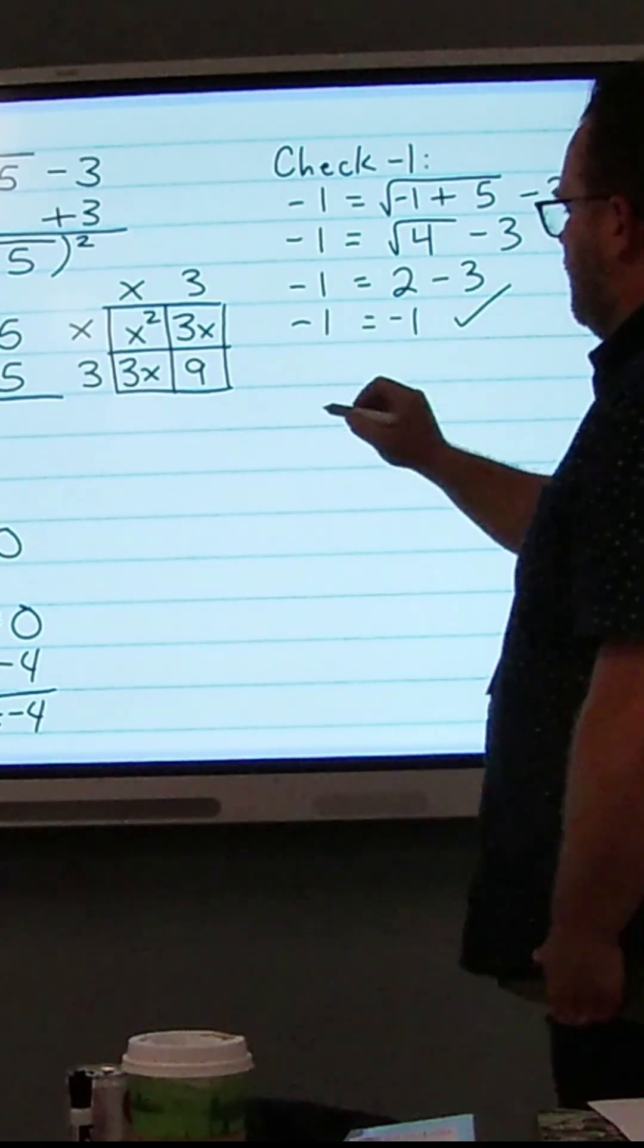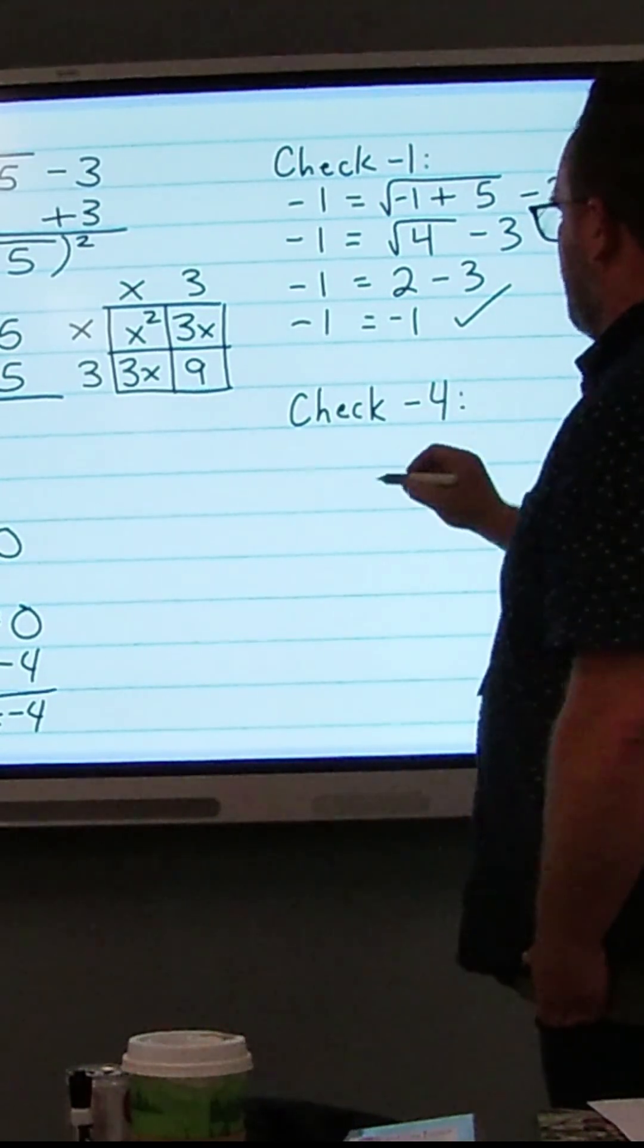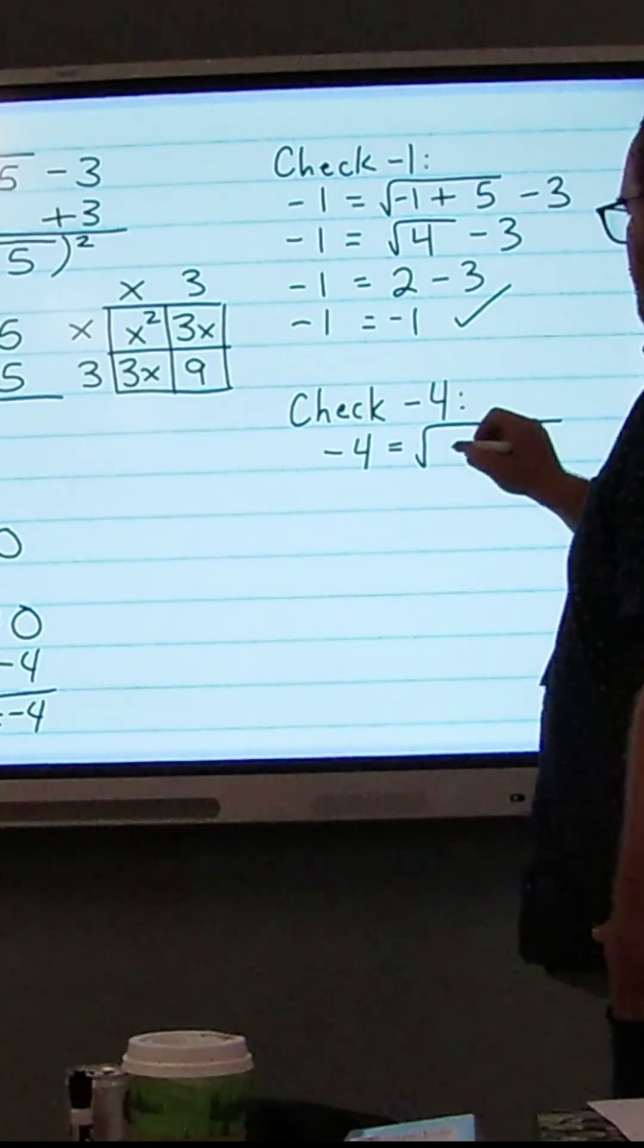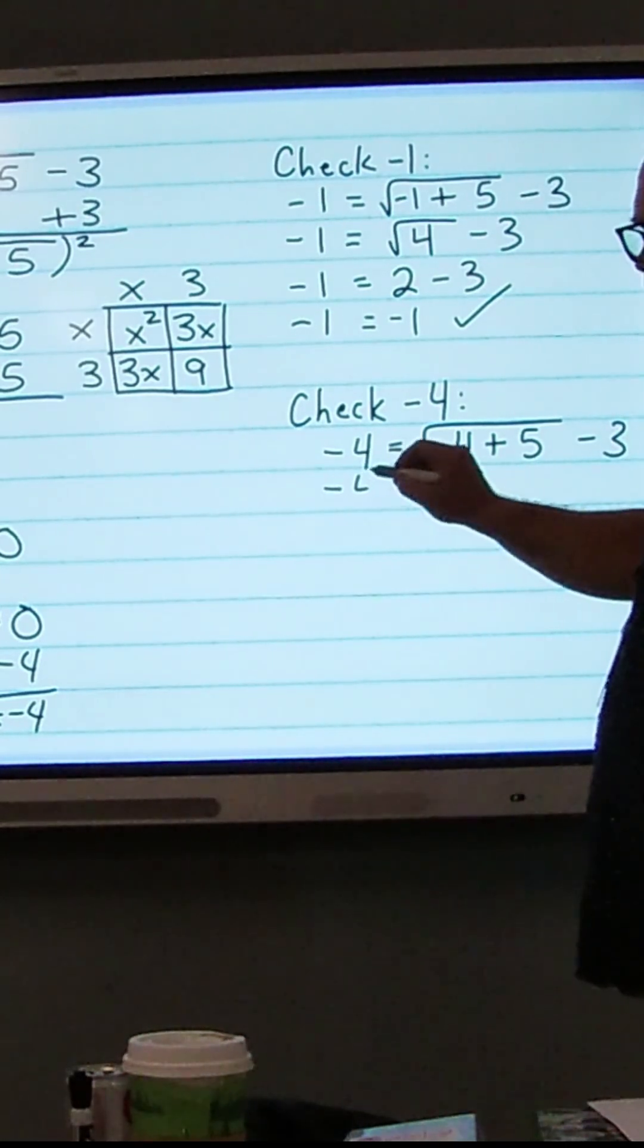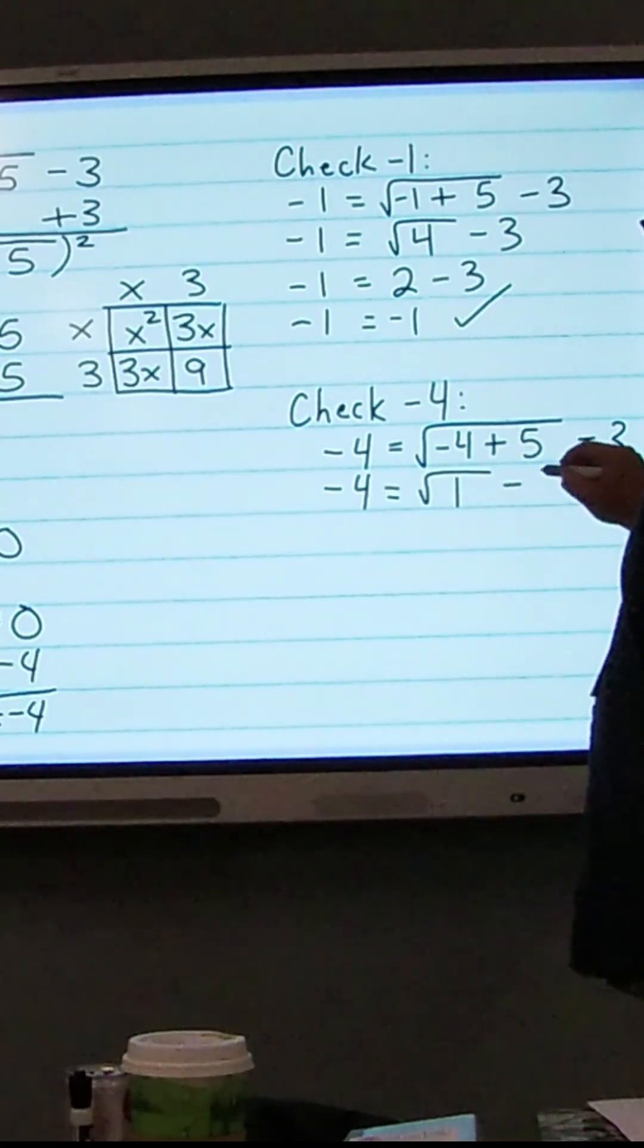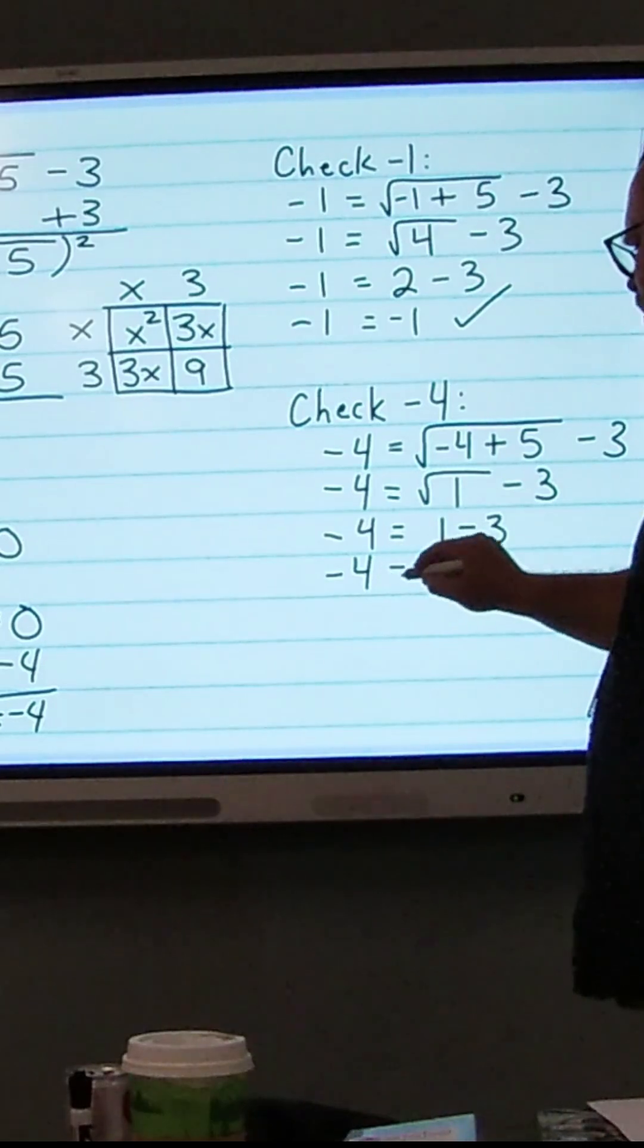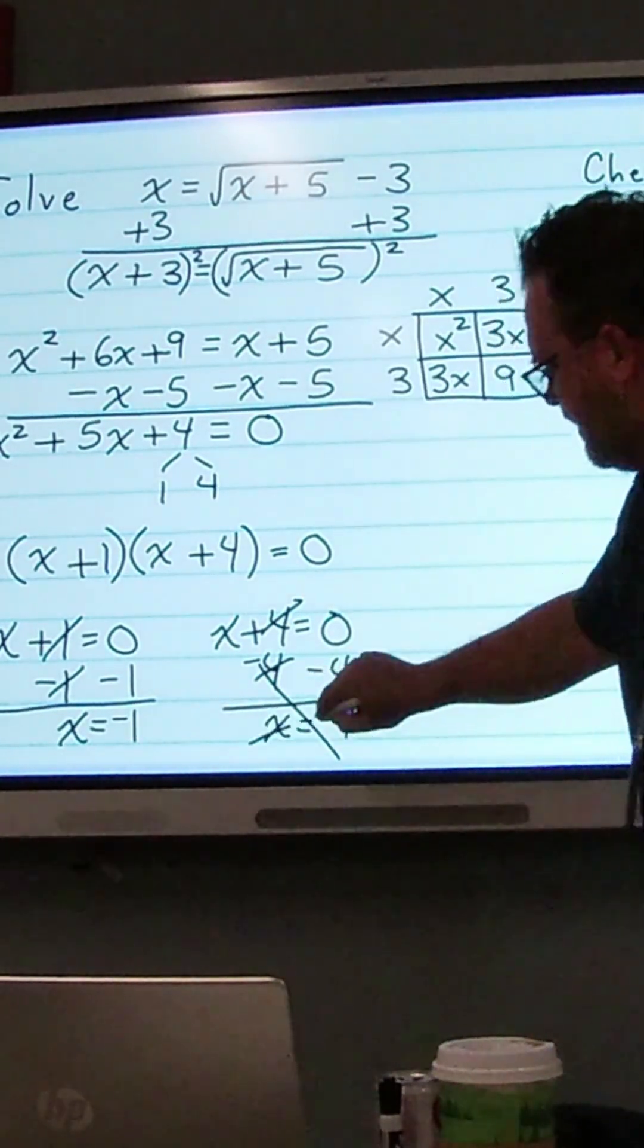We also want to check negative 4. So we're going to substitute in negative 4 into the original equation. So negative 4 equals the square root of negative 4 plus 5 minus 3. So negative 4 equals, negative 4 plus 5 is 1, so the square root of 1 minus 3. Negative 4 equals, square root of 1 is 1, 1 minus 3. And then we come out with negative 4 equals negative 2, which does not work. So negative 4 is an extraneous solution.